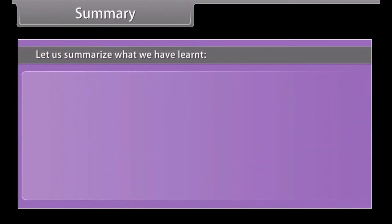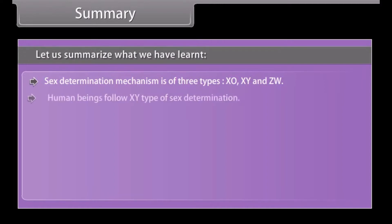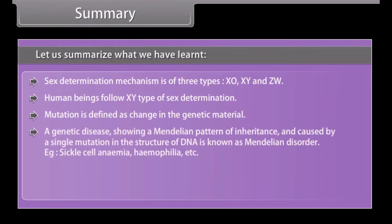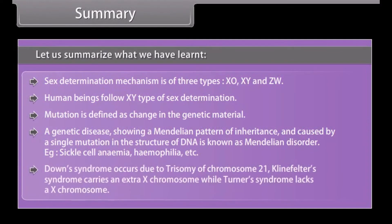Let us summarize what we have learnt. Sex determination mechanism is of three types: XO, XY, and ZW. Human beings follow XY type of sex determination. Mutation is defined as a change in the genetic material. A genetic disease showing a Mendelian pattern of inheritance caused by a single mutation in DNA is known as a Mendelian disorder — examples include sickle cell anemia and haemophilia. Down's Syndrome occurs due to trisomy of chromosome 21. Klinefelter's Syndrome carries an extra X chromosome, while Turner's Syndrome lacks an X chromosome.